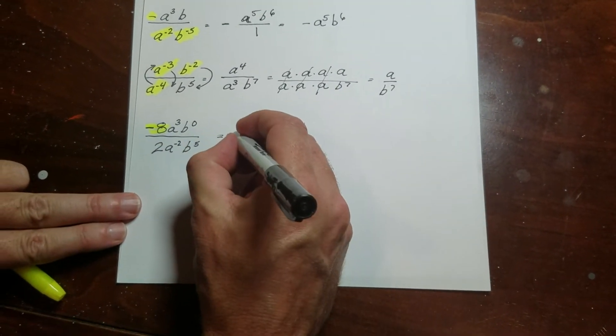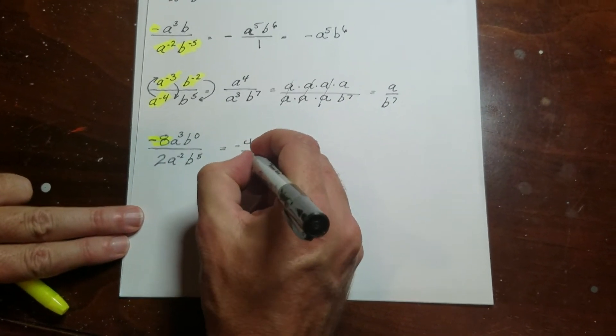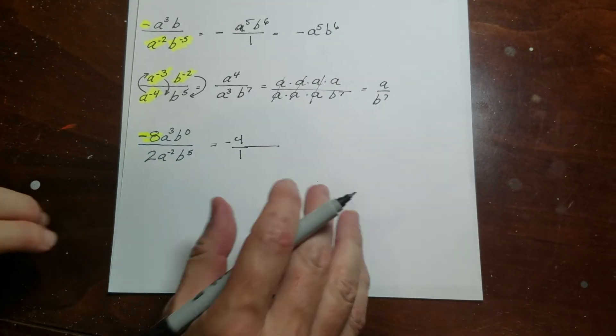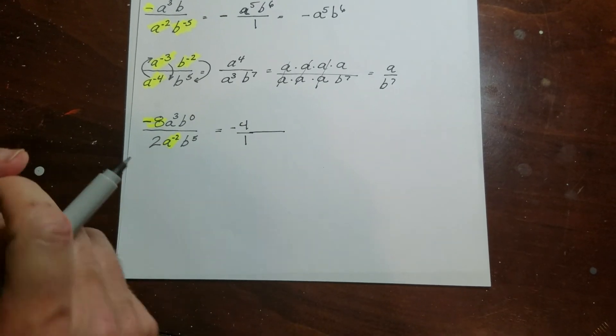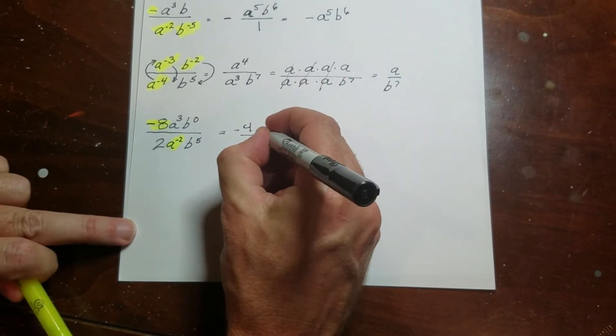This is negative 8 over 2, which is basically negative 4 over 1, if I simplify it. Then I can go ahead and do the rest of the stuff. So this a right here is going to come upstairs and join this a up here. So that's a to the 5th.